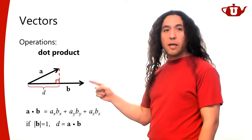If two vectors are perpendicular to each other, the cosine of the angle between them is zero, so the dot product is zero. This is great for checking whether two vectors are perpendicular. Be warned though: a dot product of zero can also occur if one of the vectors is a zero vector.